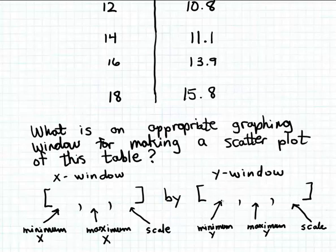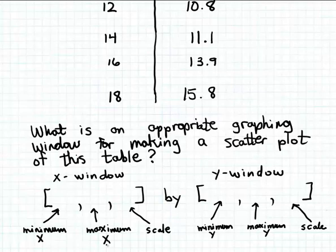The Y window works the same way. The first value is the minimum value you'll show on the Y axis, the second is the maximum value, and the third is the scale — the spacing between tick marks on the Y axis. Together, the X and Y windows make up the graphing window for your scatter plot.